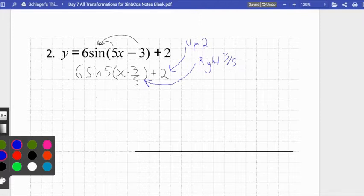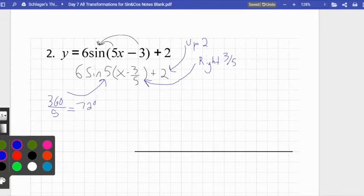Now I'm gonna take that five and I'm going to find the period with it. Remember to find the period you divide that number out of 360 or out of 2π if you're in radians. So there you have it, 72 degrees is my period.